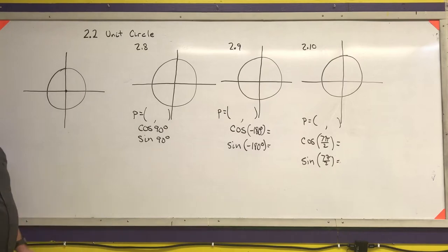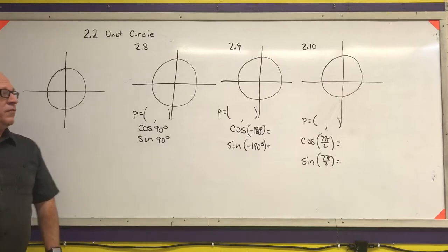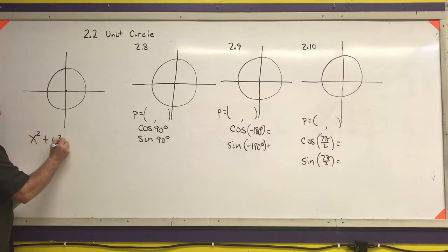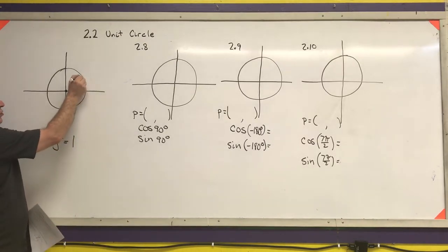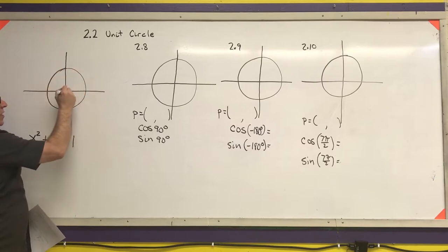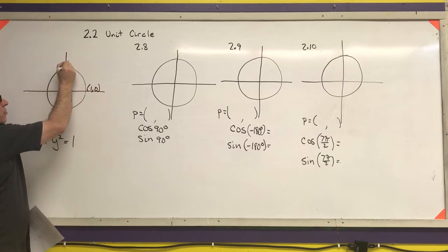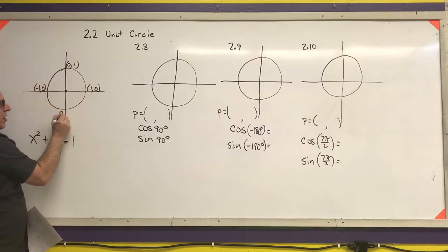The next thing in chapter two is the unit circle definition of our trigonometric functions. A reminder: the equation of a circle with radius one is x squared plus y squared equals one. Any x or y that meets those conditions is a point on this circle. With a radius of one, the key coordinates are (1,0), (0,1), (-1,0), and (0,-1).